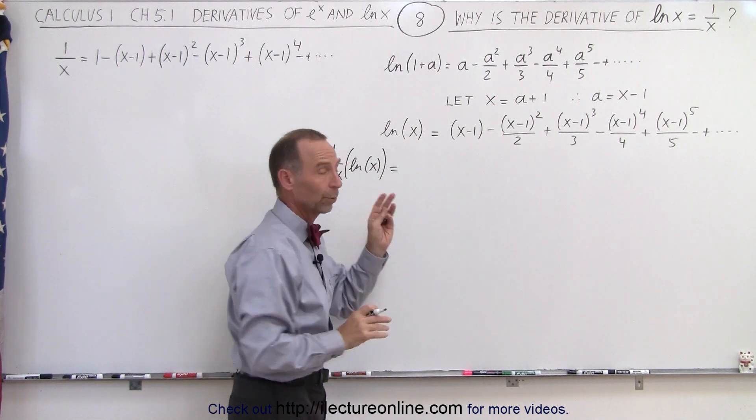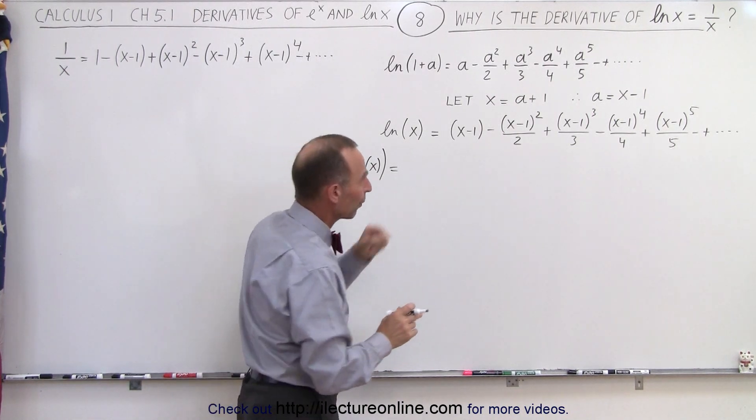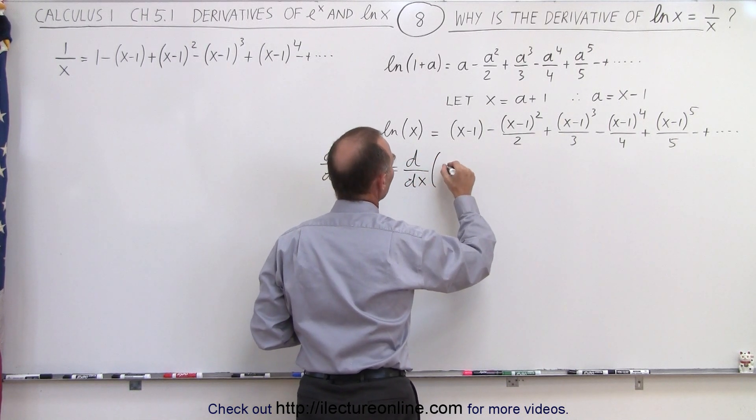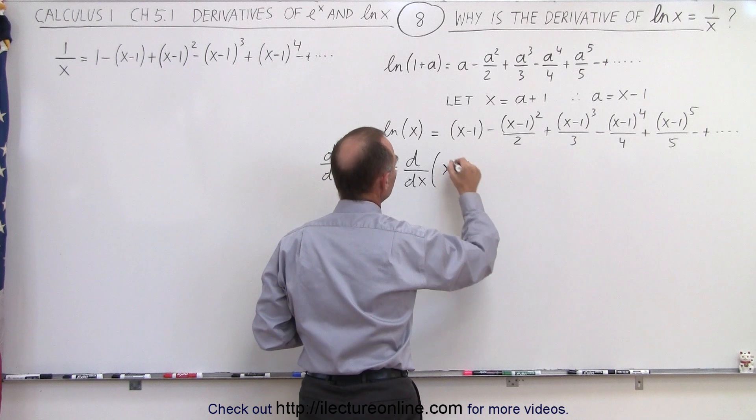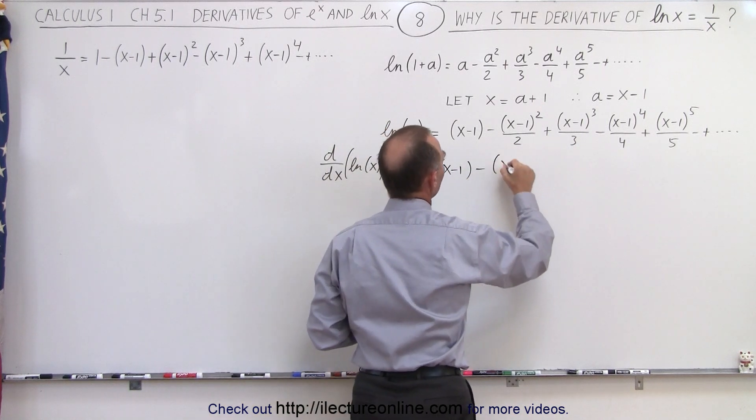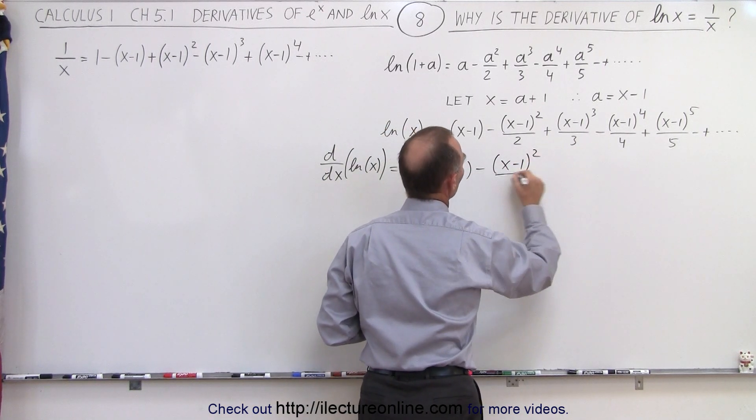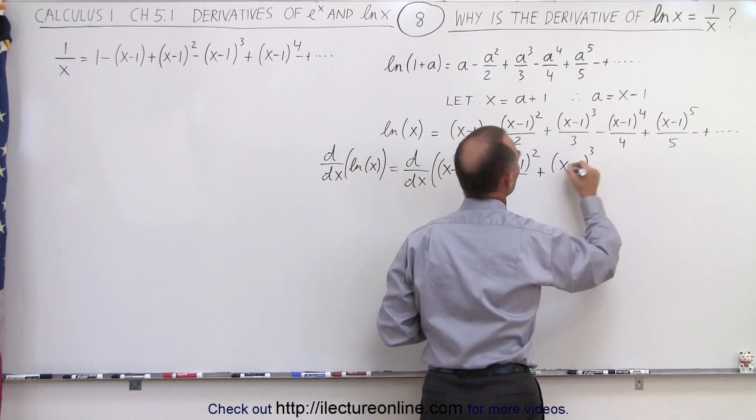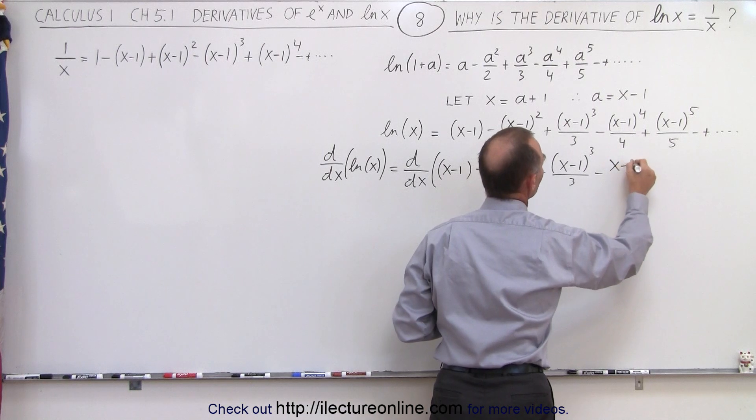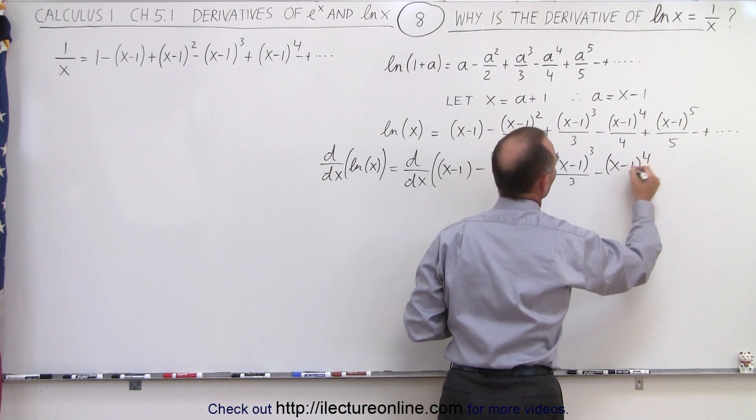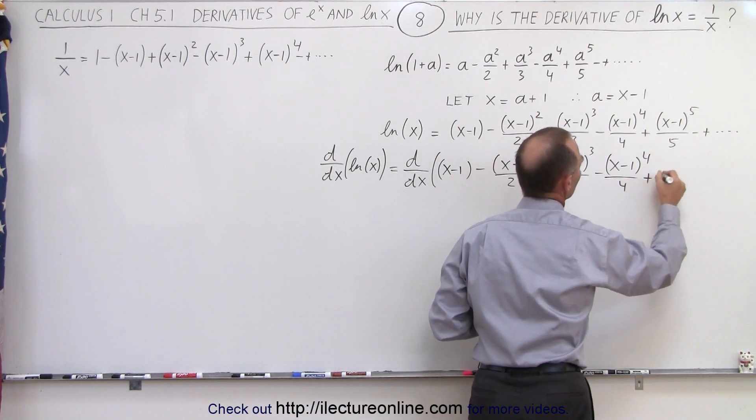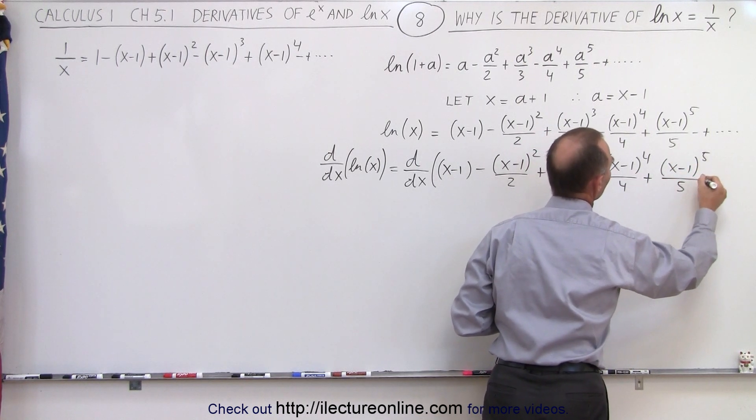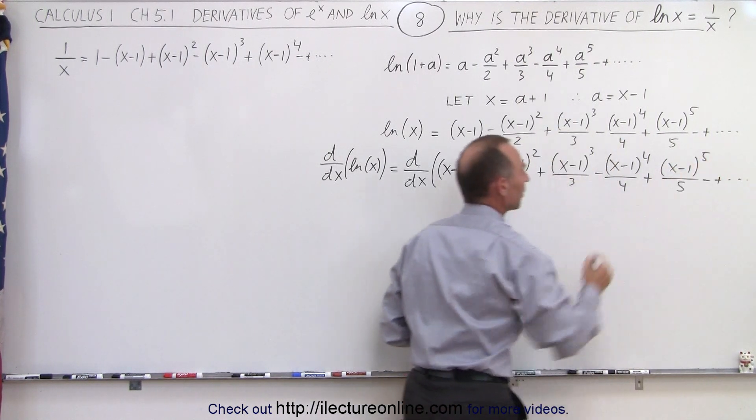So we're now going to take the derivative of the right side of that equation, so the d dx of, and we have x minus 1, minus x minus 1 squared over 2, plus x minus 1 cubed over 3, minus x minus 1 to the 4th over 4, plus x minus 1 to the 5th over 5, and so forth. You can see the pattern here.